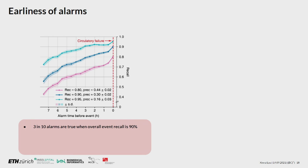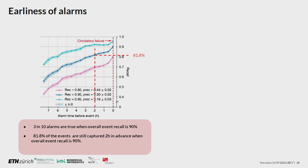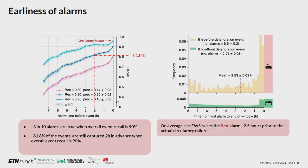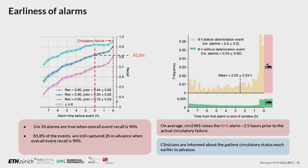We also examined how early alarms are raised prior to circulatory failure, because alarms generated only a few minutes before the event would not be very useful. For the standard CIRCUS Light at 90% recall, we still achieve 81.8% recall even two hours prior to circulatory failure. Looking at the distribution of first alarm times prior to the event, we also see that on average CIRCUS can raise the first alarm about 2.5 hours prior to actual circulatory failure. Our aim is that the system can help clinicians be aware of circulatory failure much earlier, though this still needs to be tested in real clinical settings.